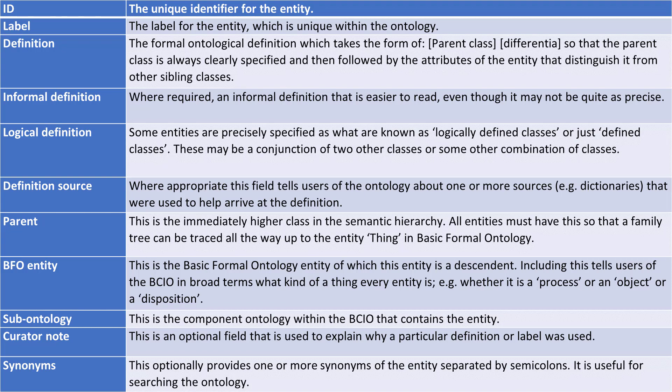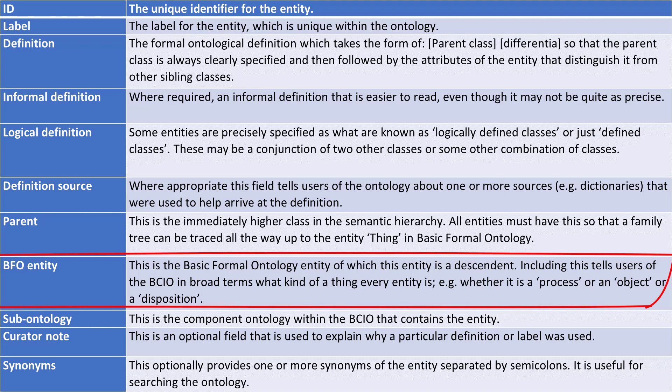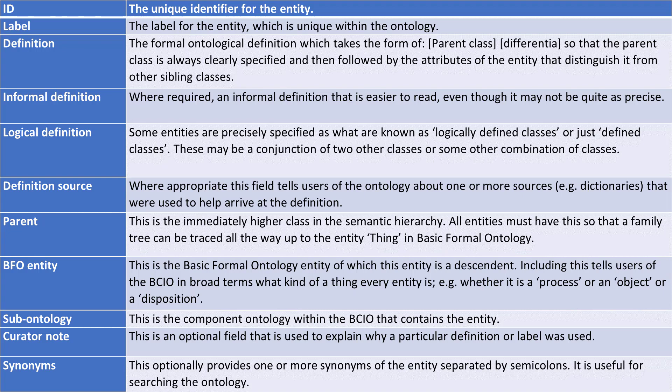Related to this, we have the BFO entity, or Basic Formal Ontology entity, which is the very high-level, very broad type of construct that this is ultimately an example of. So this is an ancestor — sometimes an immediate ancestor, and sometimes a very distant ancestor — of the class that we're interested in. And then we have things like the sub-ontology that it's a member of, the component ontology, as we sometimes call it in the BCIO.